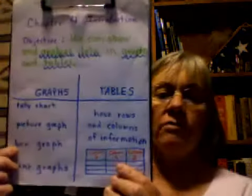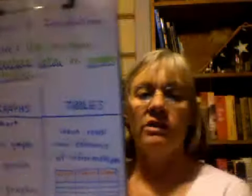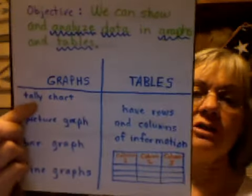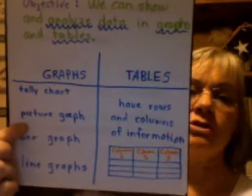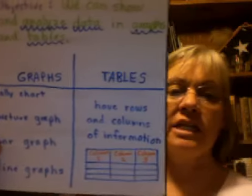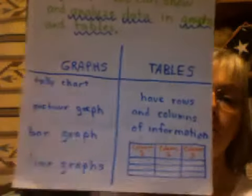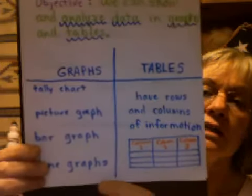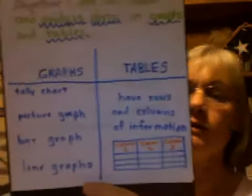There are several different kinds of graphs and tables, and I have a short summary here for you. On the column with the graphs, you can see that there are several different kinds of graphs. One kind is a tally chart. There are also picture graphs, bar graphs, and line graphs, and we'll be working with all of those in Chapter 4 of our math book.